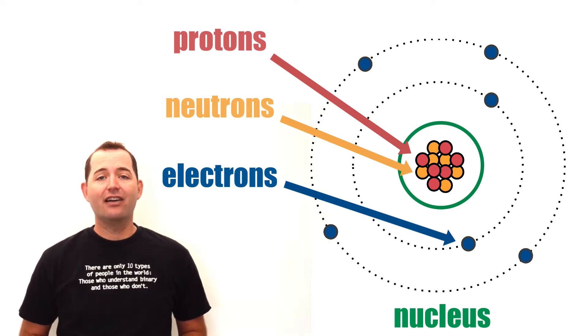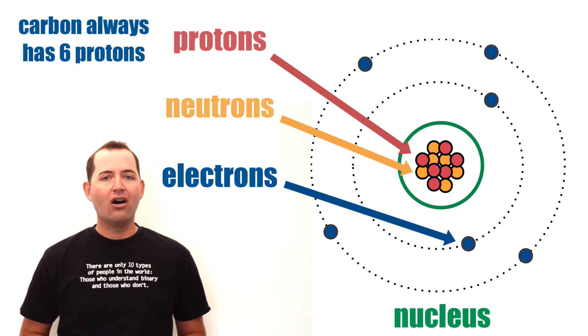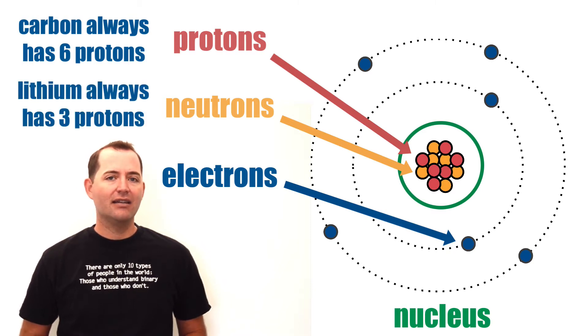Each atom is identified by the number of protons it contains. For example, all carbon atoms contain six protons and all lithium atoms will always contain three protons.